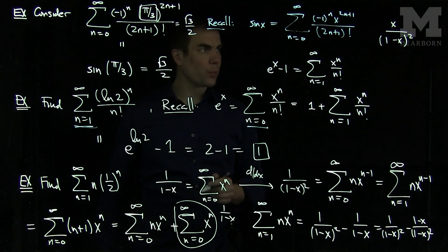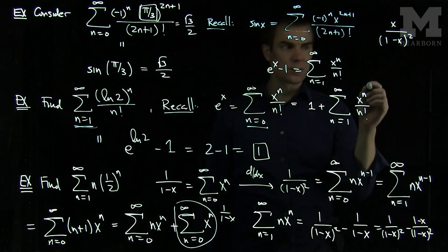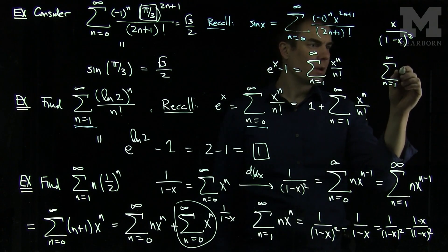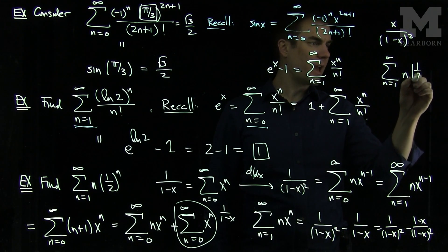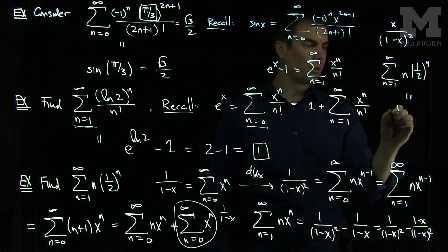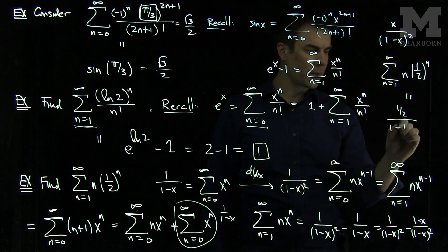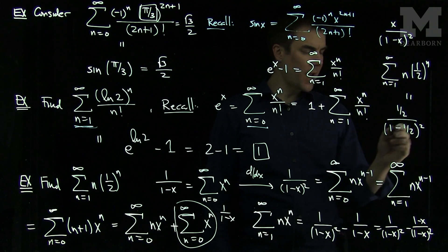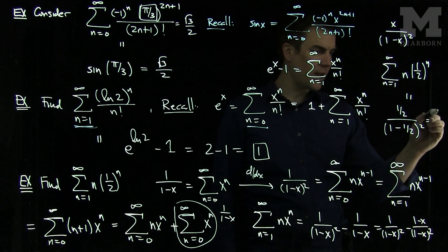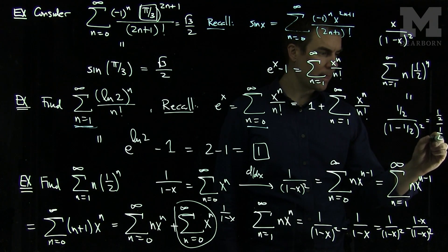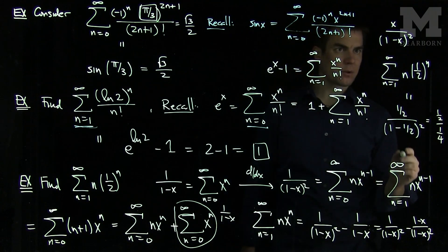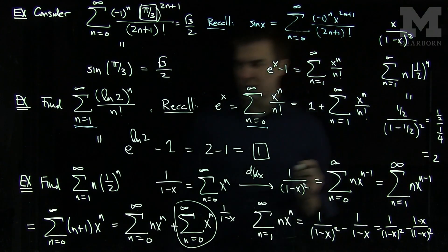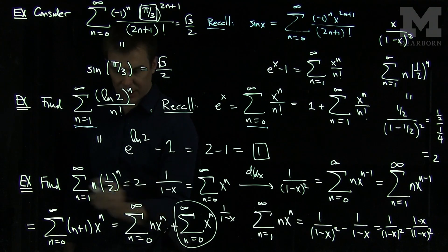We plug in the value 1 half. So the sum n goes from 1 to infinity of n times 1 half to the n equals 1 half over 1 minus 1 half squared. This equals 1 half over 1 quarter, which is equal to 2. So the sum is equal to 2.